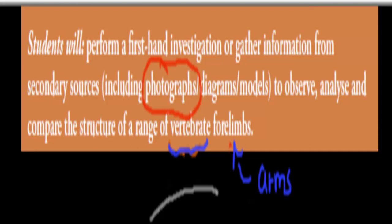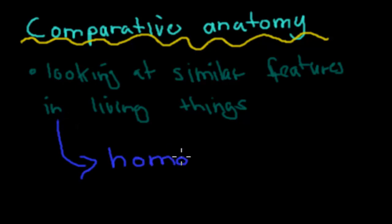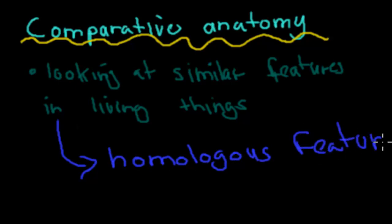If you remember from the last video, we talked about comparative anatomy — looking at similar features in living things, so looking at arms of different animals and seeing how they look, whether they're similar or different. In this video there's one really important word: homologous feature. If you look at the arms of different animals and find that they're all quite similar, then you have found a homologous feature.